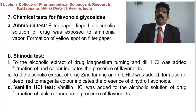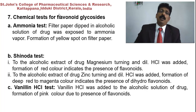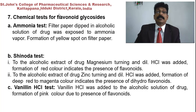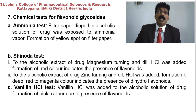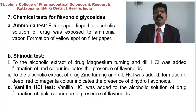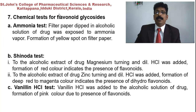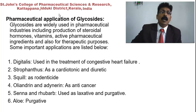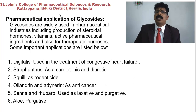Chemical tests for flavonoid glycosides: ammonia test — filter paper dipped in alcoholic solution of the drug is exposed to ammonia vapor; formation of a yellow spot on the filter paper indicates presence of flavonoid glycosides. Shinoda's test — to the alcoholic extract of drug, magnesium turnings with dilute hydrochloric acid are added; formation of red color indicates flavonoids. With zinc turnings and dilute hydrochloric acid, formation of deep red to magenta color indicates dihydroflavonoids. Vanillin–hydrochloric acid test: addition to the alcoholic solution gives pink color due to presence of flavonoids.